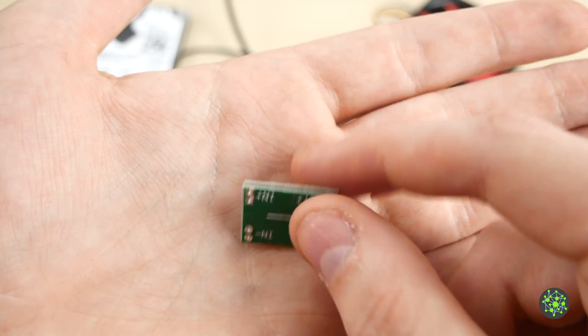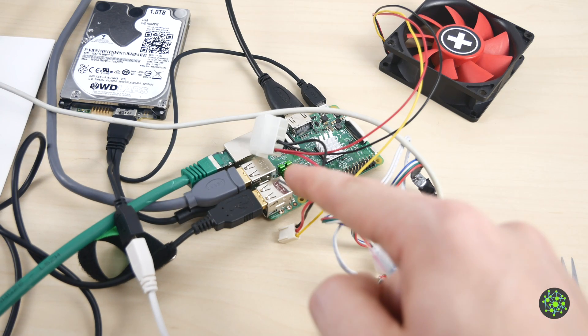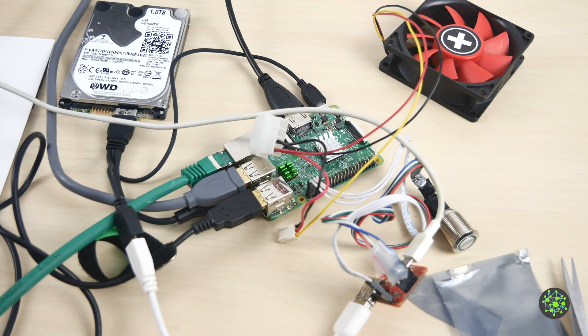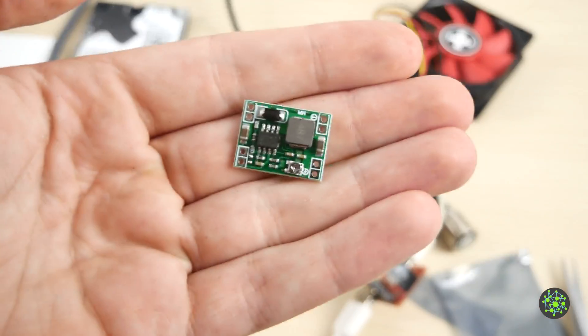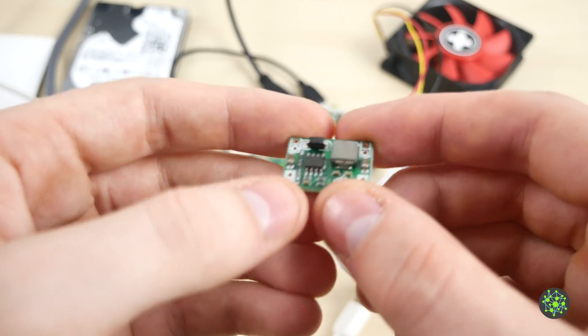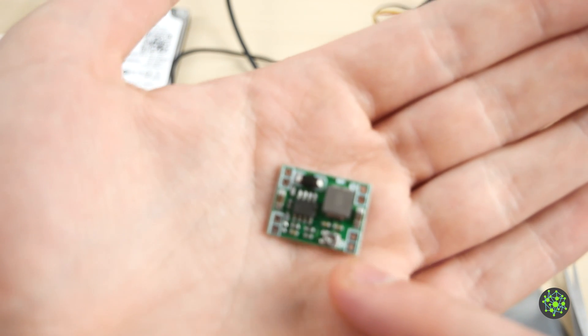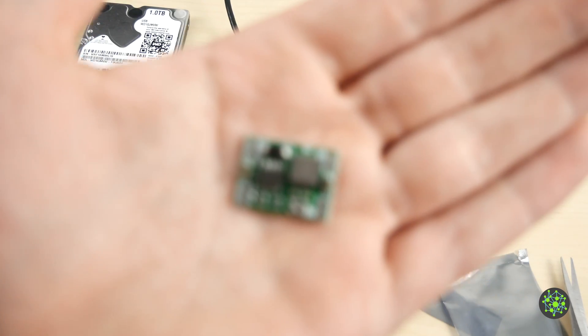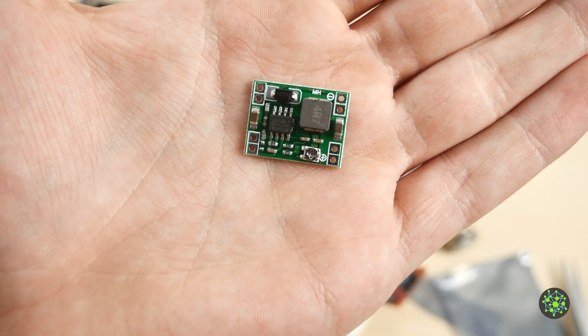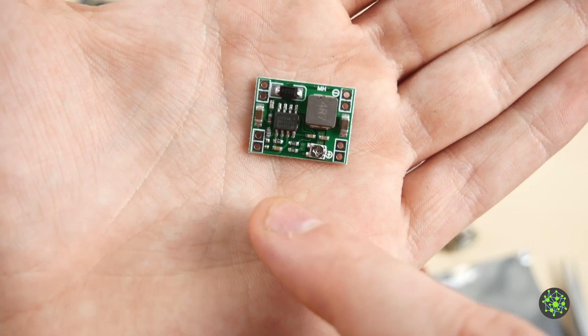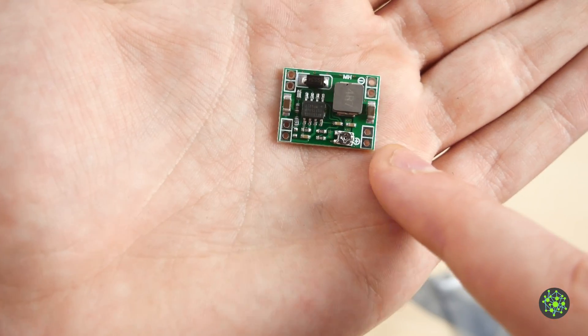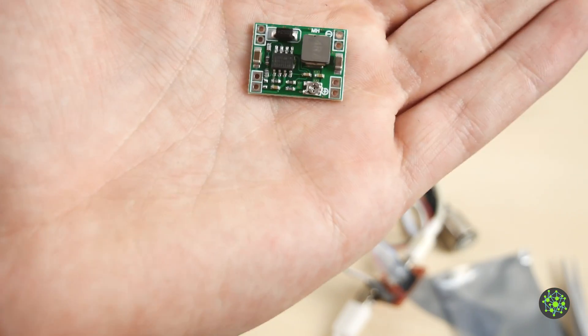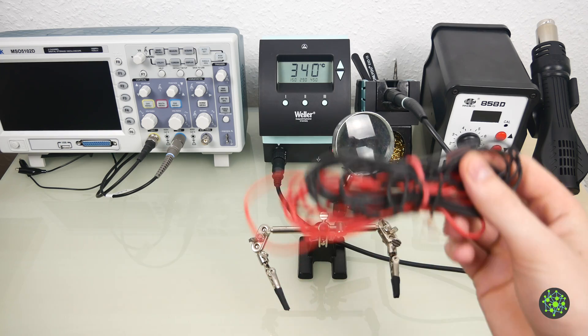We will be using it to step down the 12 volts that are needed for the fan to the 5 volts that we will need for the Raspberry Pi and the hard drive. This thing is rated to up to 3 amps, so that should be plenty enough. We will solder on some connectors so we can connect some jumper cables to it for testing, and then we will set this potentiometer to a value where the output is 5 volts and the input is 12 volts.